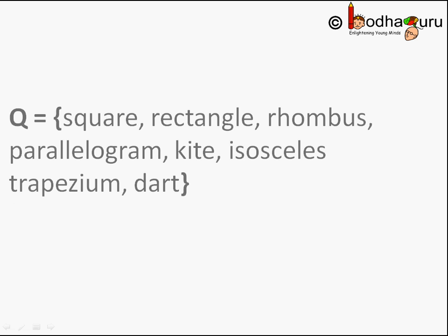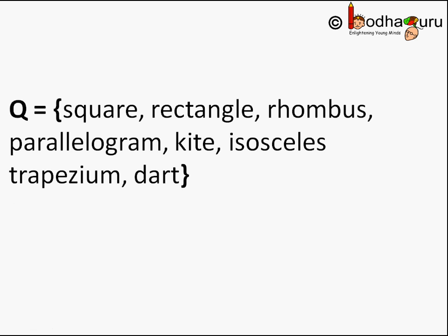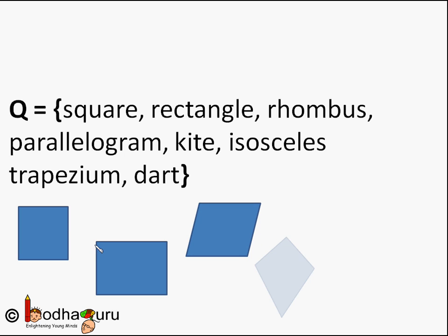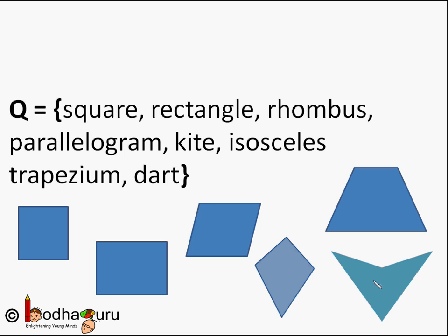All the elements in a set have something in common or follow some common rule. For example, Q is a set of quadrilaterals which has at least two equal sides. So Q would have shapes such as square, rectangle, rhombus, parallelogram, kite, isosceles trapezium, dart. All these shapes have four sides of which two are equal sides. When we write a set like this by listing the elements, we say the set is in roster form.